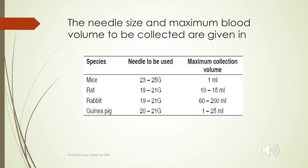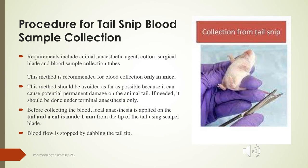Needle size and blood volume vary by animal species. For mice: 22–25 gauge needle, maximum 1 ml blood. For rats: 19–21 gauge, 10–15 ml. For rabbits: 19–21 gauge, up to 60–200 ml. For guinea pigs: 20–21 gauge, 1–25 ml. The volume of blood collection depends on the weight of the animal.